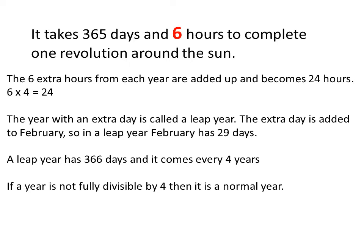The extra day is added to February, so in a leap year, February has 29 days. A leap year has 366 days and it comes every 4 years. A leap year is fully divisible by 4. For example, if you divide 2008 by 4, the remainder is 0, so 2008 is a leap year — as is 2012, 2016, and so on.